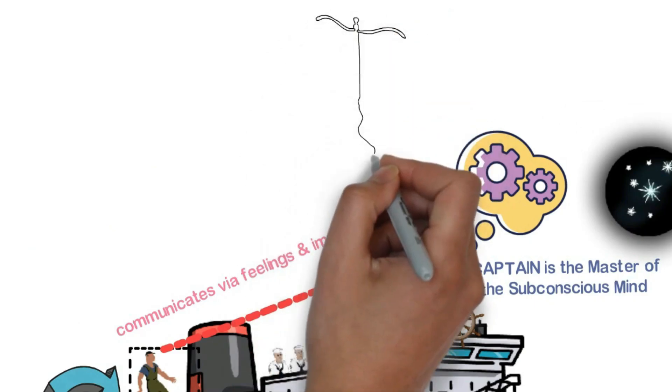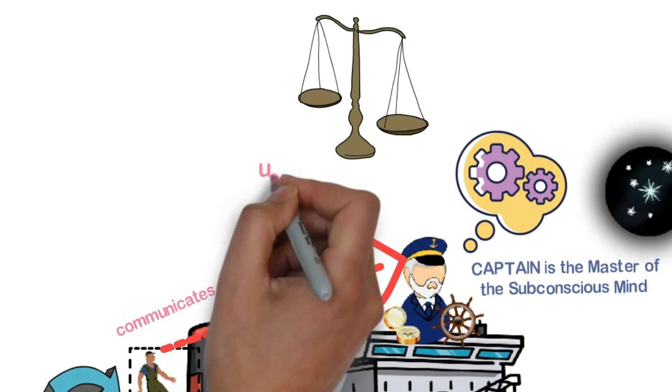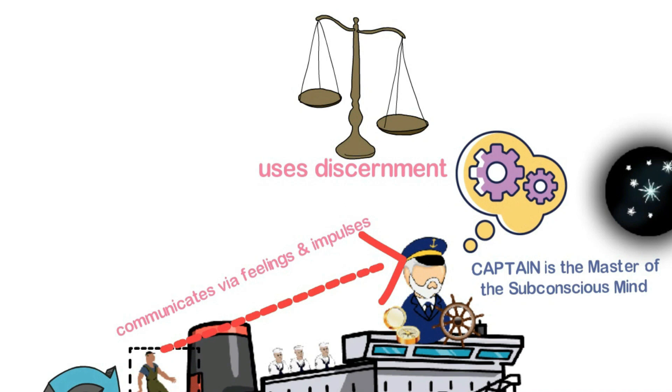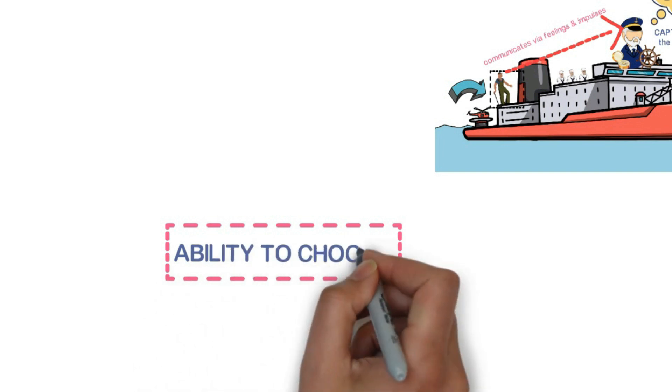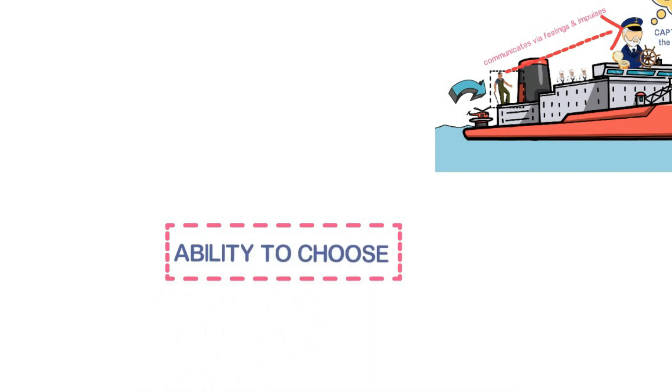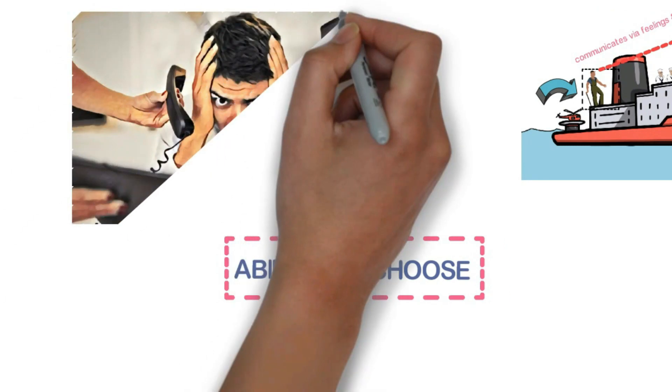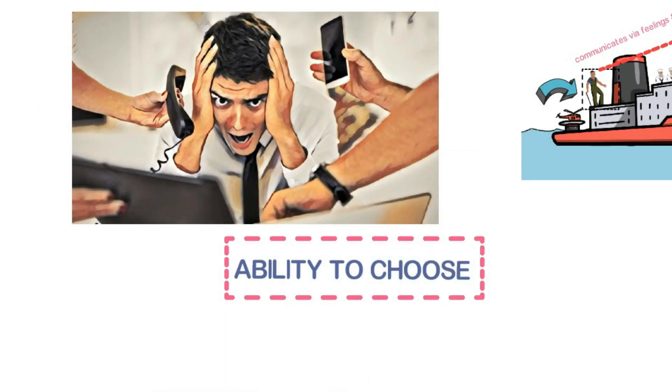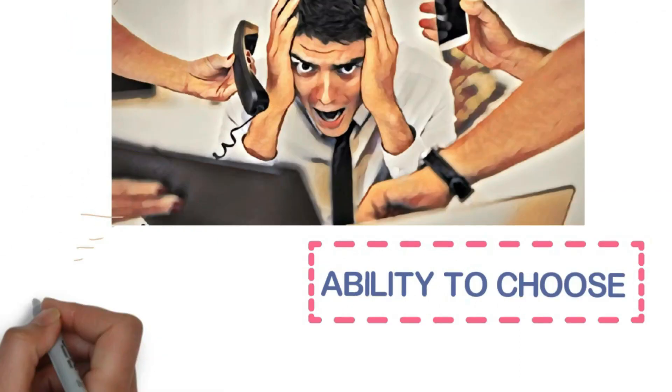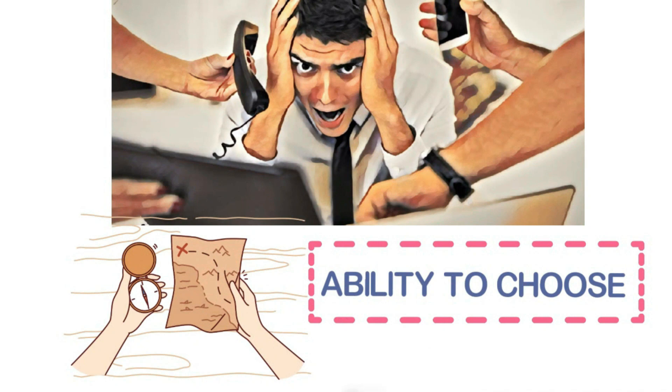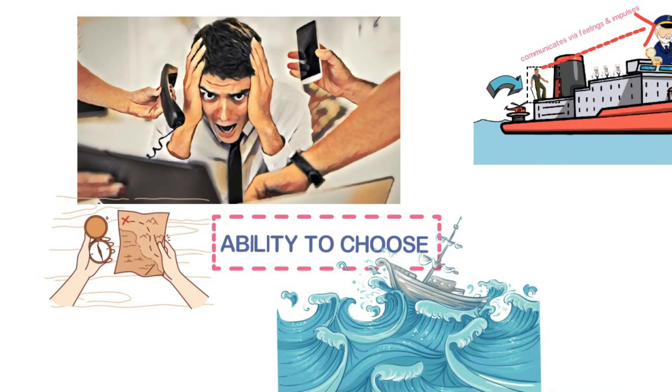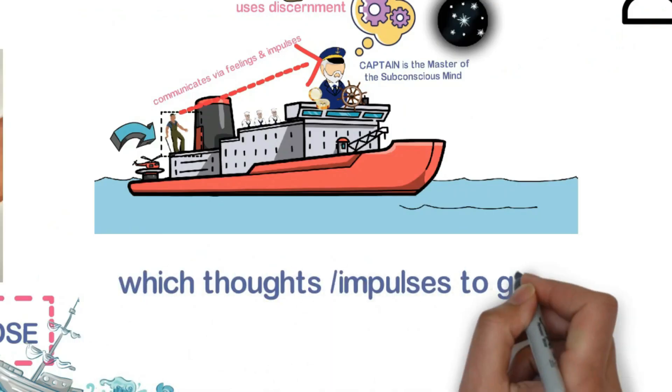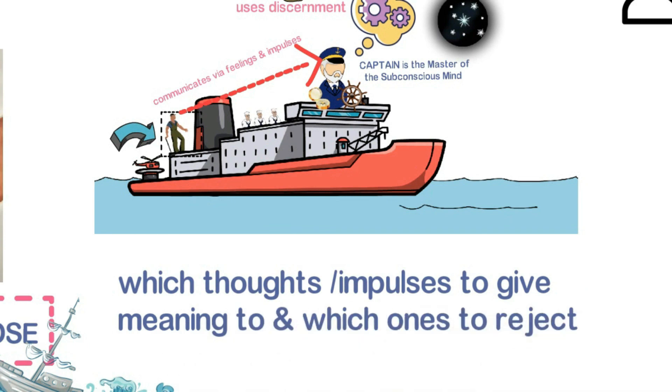The captain takes in all the information from this guy, and then uses his reasoning skills to discern. If the information is not worth paying attention to, then that impulse or feeling is not acted upon. Now this ability to choose and discern, that is our captain's superpower. Because we can't afford our captain to get distracted with unnecessary details or through painful memories of the past from the subconscious mind. Or else, our ship can go off course. Or worse, our ship might get caught up in a storm. So our captain's ability to choose which thoughts, impulses he will give meaning to, which one he will reject, that's what makes him powerful.